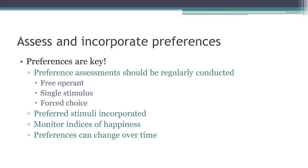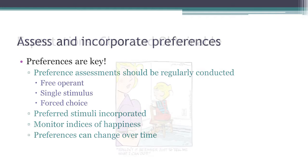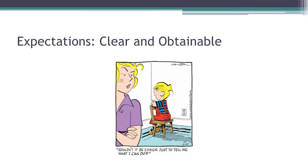There are different types of preference assessments. In general, you can look at what the child does in free play — what do they go to? You can also expose them to things one at a time and see how they engage with it. Or you can offer them a series of choices, a first-choice paradigm. Wouldn't it just be easier to tell me what I can do, not just what I can't do?